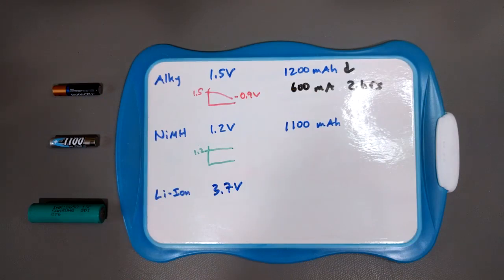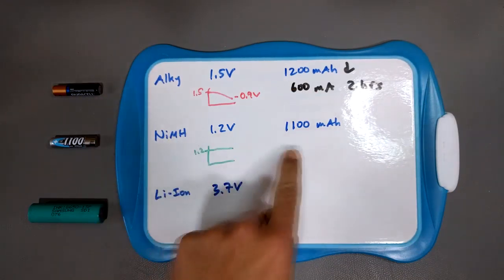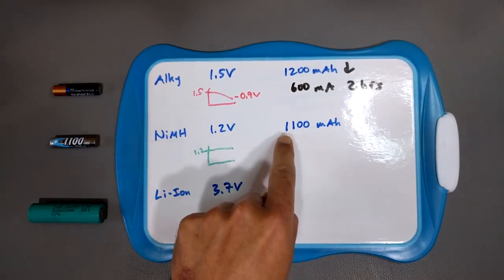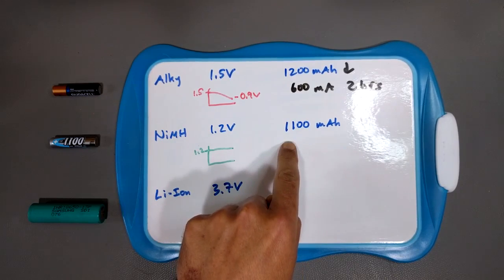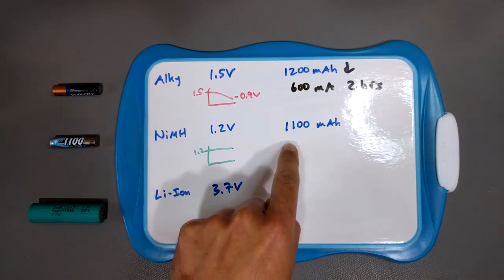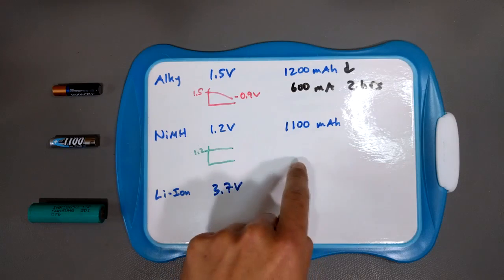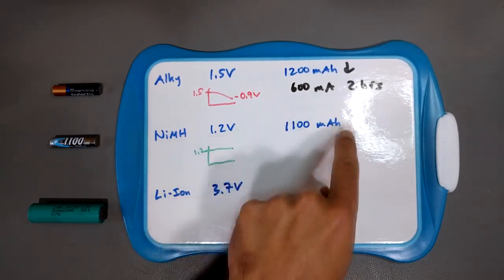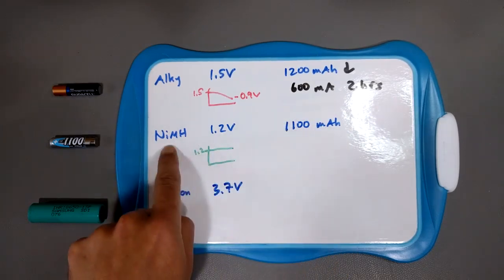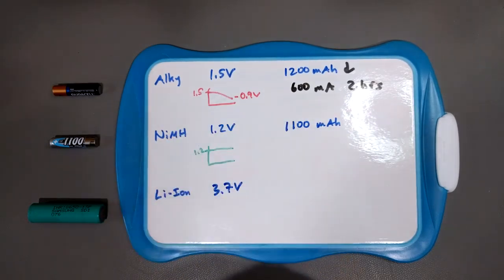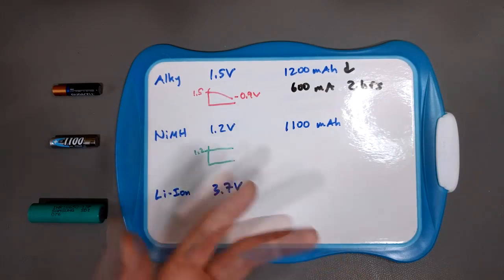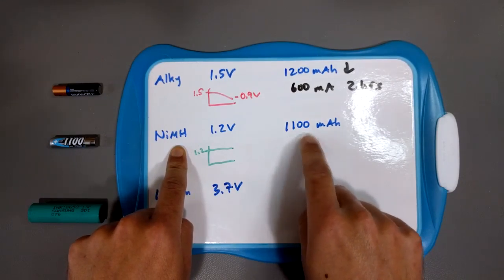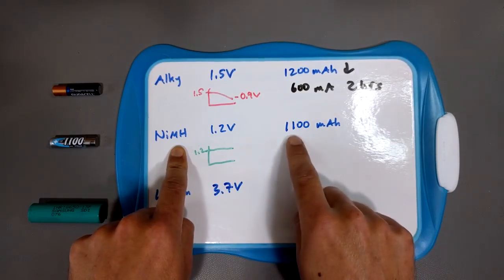Because the minute you start pulling lots of current from the alkaline, this total number here starts dropping. So you can pull 600 milliamps from it, but the rating of this battery might drop down to say, like 500 milliamp hours. So with alkalines, this milliamp hour rating isn't constant. The more current you try to pull from it, the lower the actual milliamp hour rating of the battery gets. It starts dropping. To help explain that maybe a little bit better, let's think about nickel metal hydride cells.